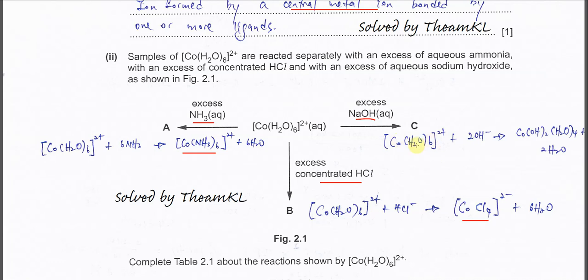And of course when sodium hydroxide is added to this complex ion, it will form a precipitate. So it's just 2H2O removed and 2 hydroxide will add in. So this is the precipitate, the blue precipitate.